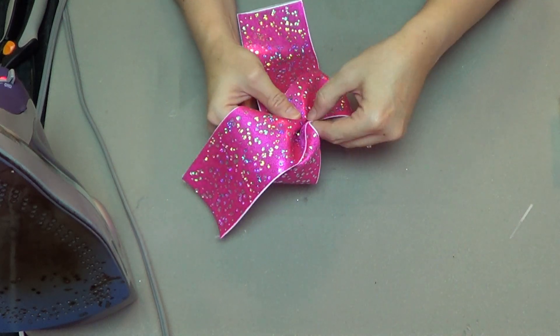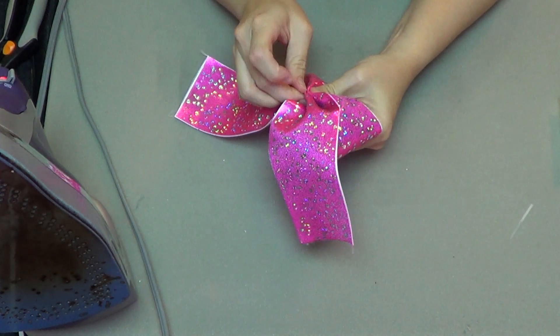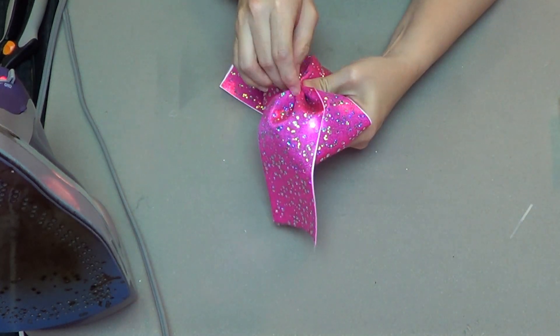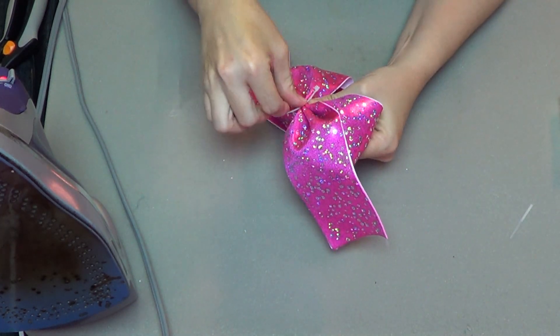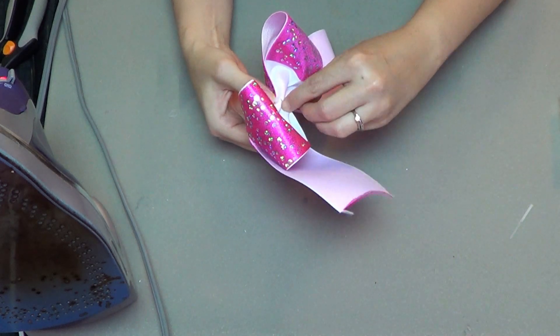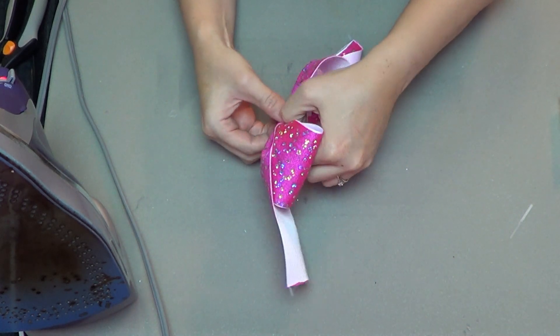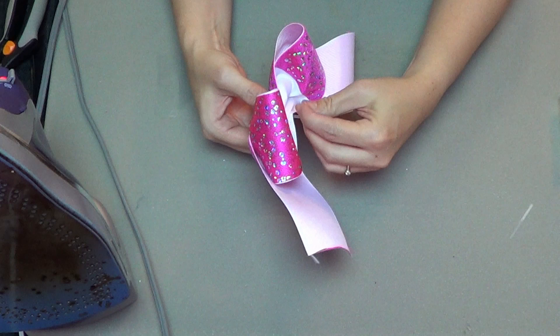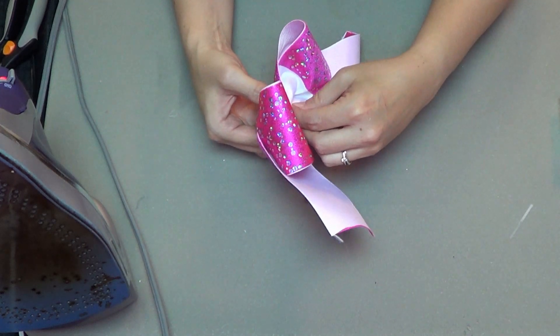When you make a cheer bow, you want to work the center back and forth with your hands and then use a zip tie to hold the center tight. When you pull the zip tie shut, you're going to want to pull it about halfway shut.